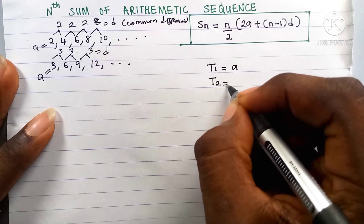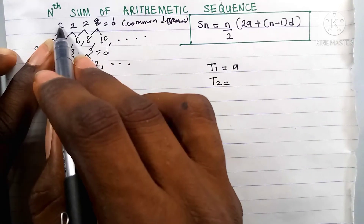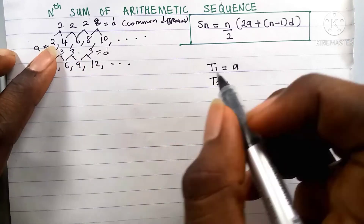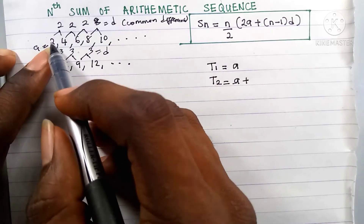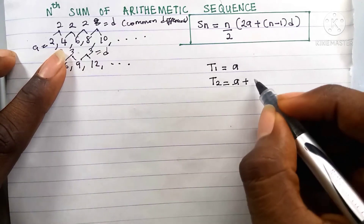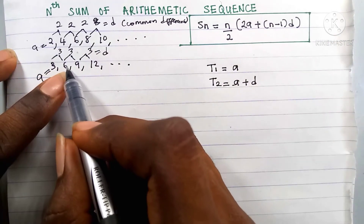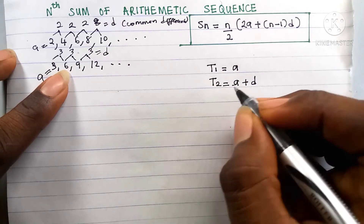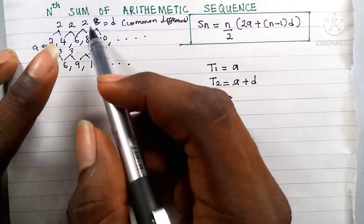The second term of an arithmetic sequence is the first term plus the common difference. For example, the second term 4 equals 2 plus 2, so t2 equals a plus d. Similarly here, the second term 6 is 3 plus 3, so t2 equals a plus d.